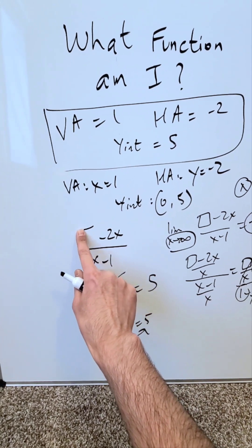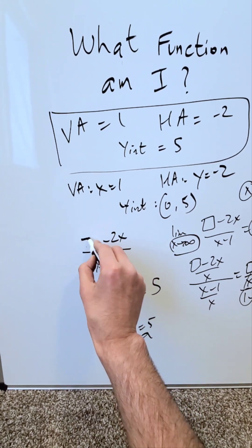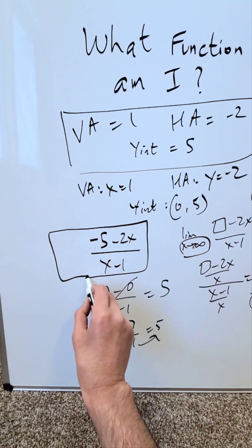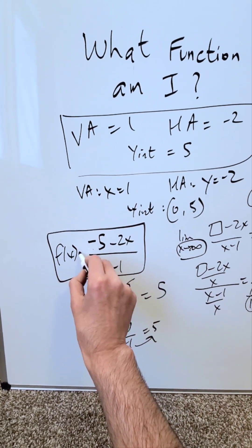And suddenly our rational function takes light. We have a minus 5 minus 2x over x minus 1. This right here is my rational function and it will be correct.